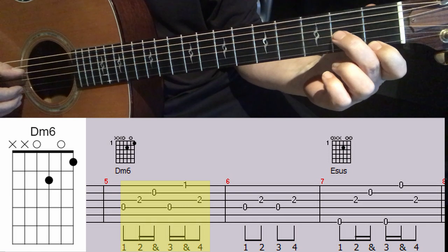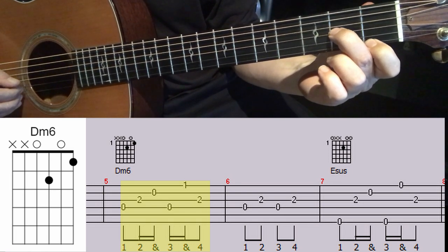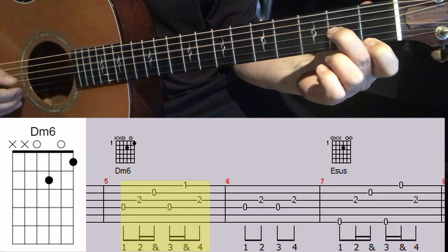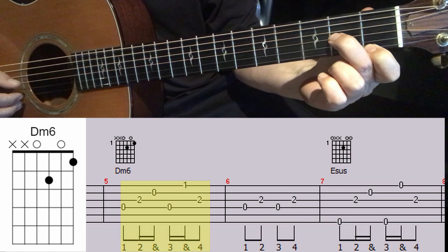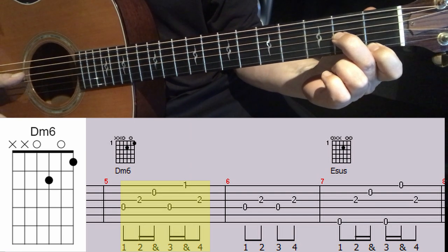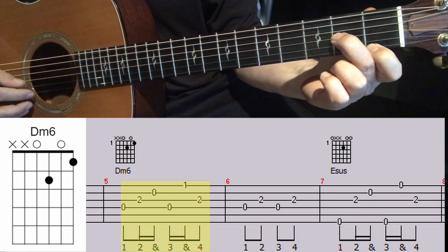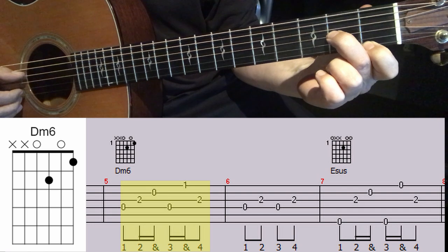So the next part is we're playing on strings four, three, two, four, one, three. And it's a form of a D minor chord. It's called a D minor six. So we're only playing on these top four strings here. Strings one, two, three, four.